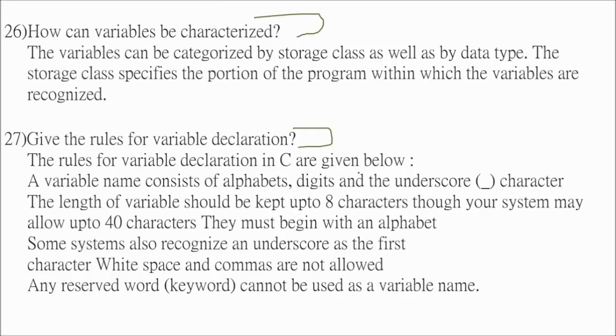And give the rules of variable declaration. Rules of variable declaration of C as I earlier suggested, it should start with any variable. You can start with underscore and alphabet, not a digit. But it may contain alphabet, digit and underscore. The length variable should be kept up to 8 characters, 40 characters, you can go to 56 also. They must begin with the alphabet, some system also recognize underscore as the first character. So white spaces and commas are not allowed. These are not allowed. Any reserved word, keyword cannot be used as a variable. As I suggested, keyword you cannot use.